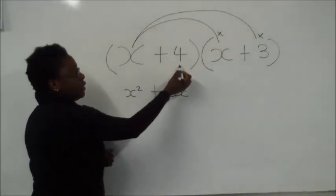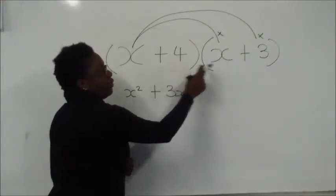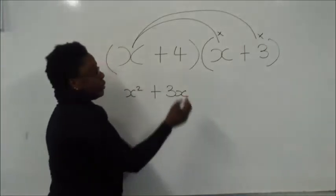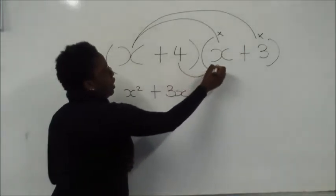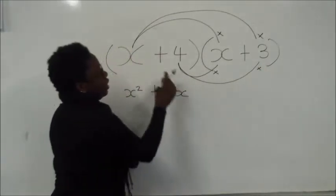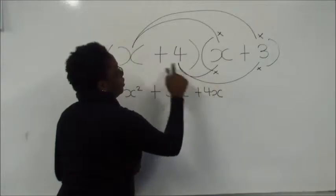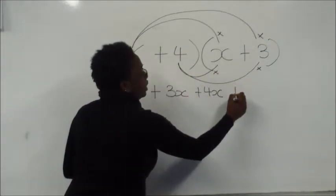Then we move on to the second term, which we use to times by x, and we use the same 4 to times positive 3. So positive 4 times x is positive 4x. Positive 4 times positive 3 is positive 12.